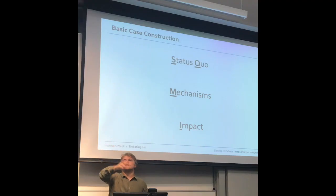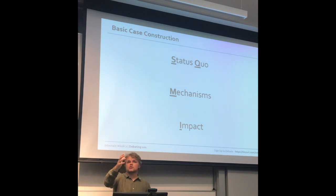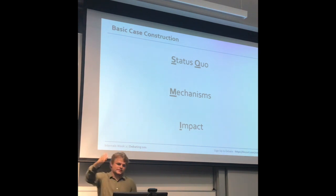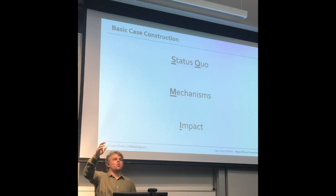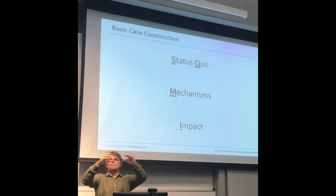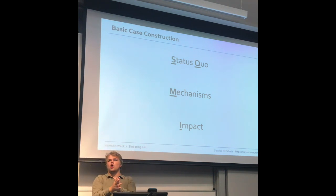We'll illustrate what these things mean shortly. Firstly, what is the status quo? Secondly, what mechanism do we have to change the status quo? Thirdly, what are the impacts of that mechanism — what changes are we making specifically? So, onto the status quo: you should fundamentally just explain what the world looks like now.